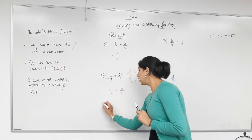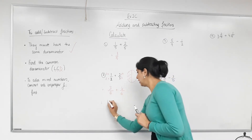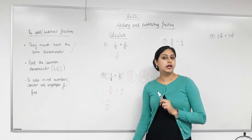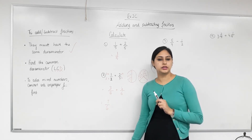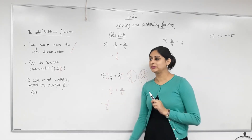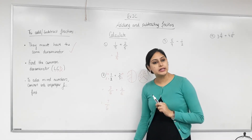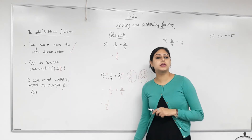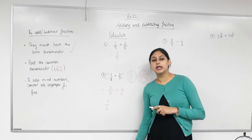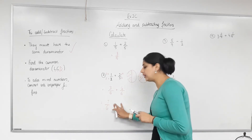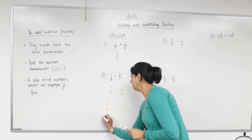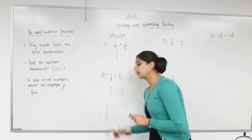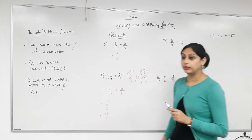Now we add the tops: three plus four is seven, and the denominator stays the same — seven-sixths. However, this fraction is improper because the numerator is bigger than the denominator. We need to convert it to a mixed number. Six goes into seven one time with a remainder of one, so the answer is one and one-sixth.